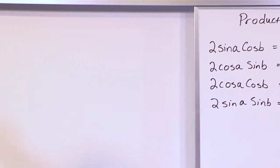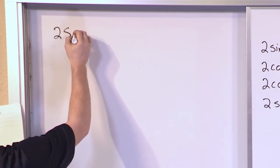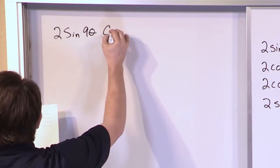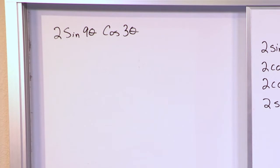Let's start off with a fairly simple problem. Let's say we have 2 times the sine of 9 theta times the cosine of 3 theta. And we want to express this as a sum or a difference. That's what the problem is, we're trying to express it as a sum or a difference.